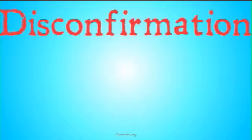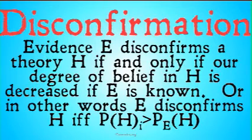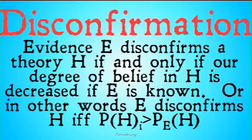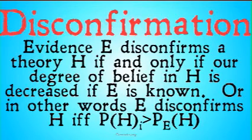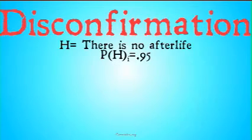On the other end of the spectrum, we have disconfirmation, which is exactly what you would expect — the exact opposite. Evidence E disconfirms a theory H if and only if our degree of belief in H is decreased if E is known. In other words, E disconfirms H if and only if our initial probability is higher than our conditional probability, or our final probability of H given E. We'll do an example just to make it clear.